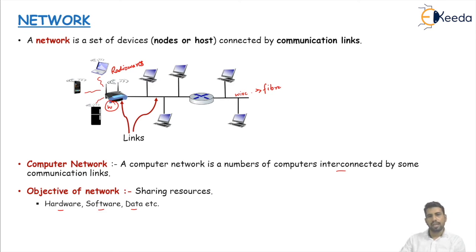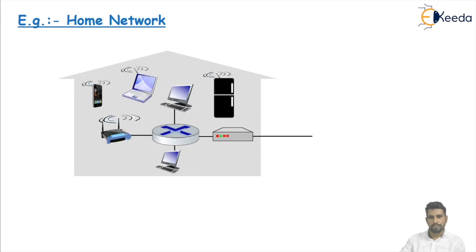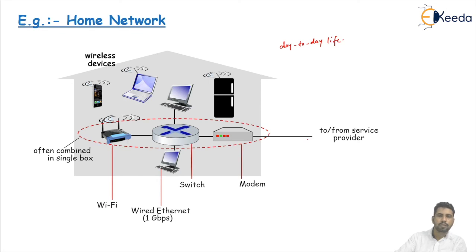If we see an example of network in our day-to-day life, the example is home network. In our day-to-day life, in our homes, we have a cable - means a service provider provides us the service of internet. Here I am using a modem. This modem is changing the coming signal into the data.